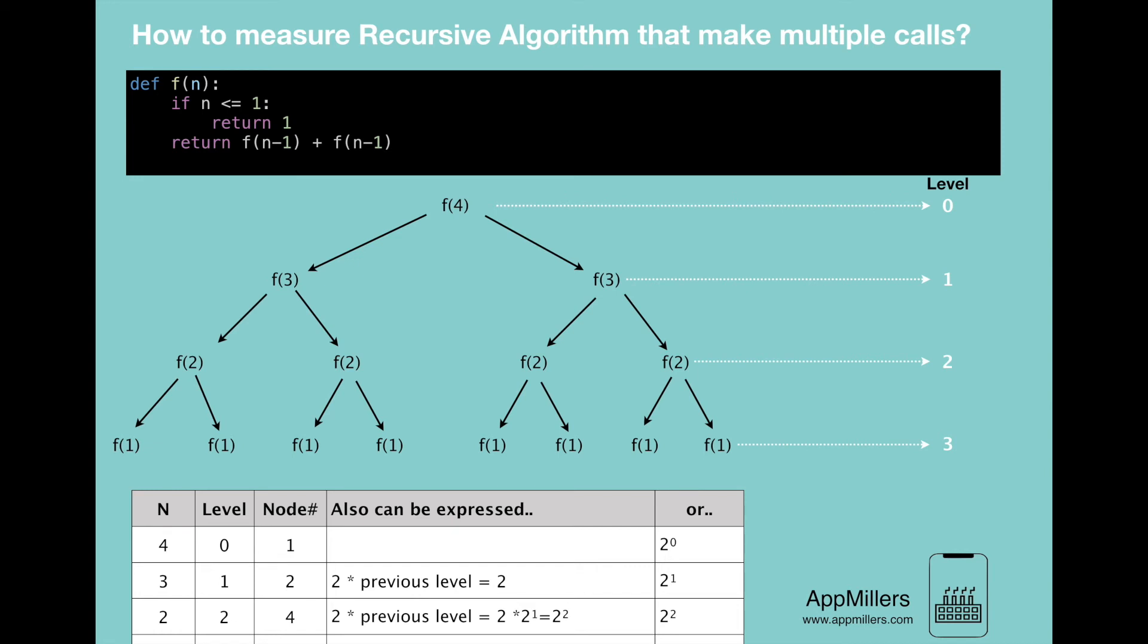So from math, we know that sum of powers of 2 is equal to 2^(n+1) - 1. But in our case, we are not going till n, we are summing the powers till 2^(n-1). So in this case, our equation will be like this.